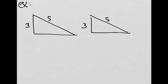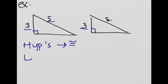So let's look at this example. We have sides 3, 3, 5, 5, and by the way, these are right triangles. We see that the hypotenuses are congruent and that one leg is congruent.